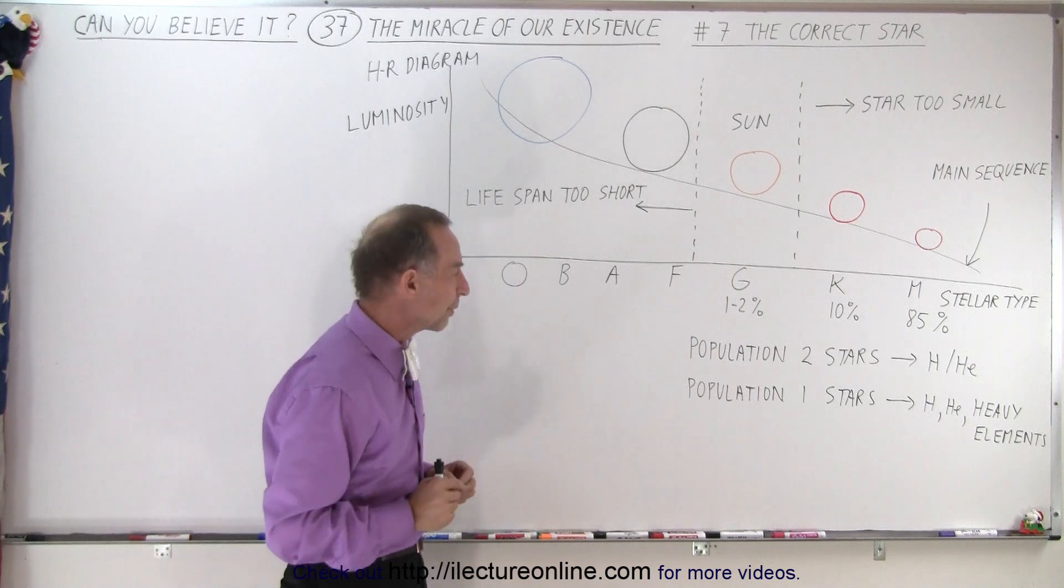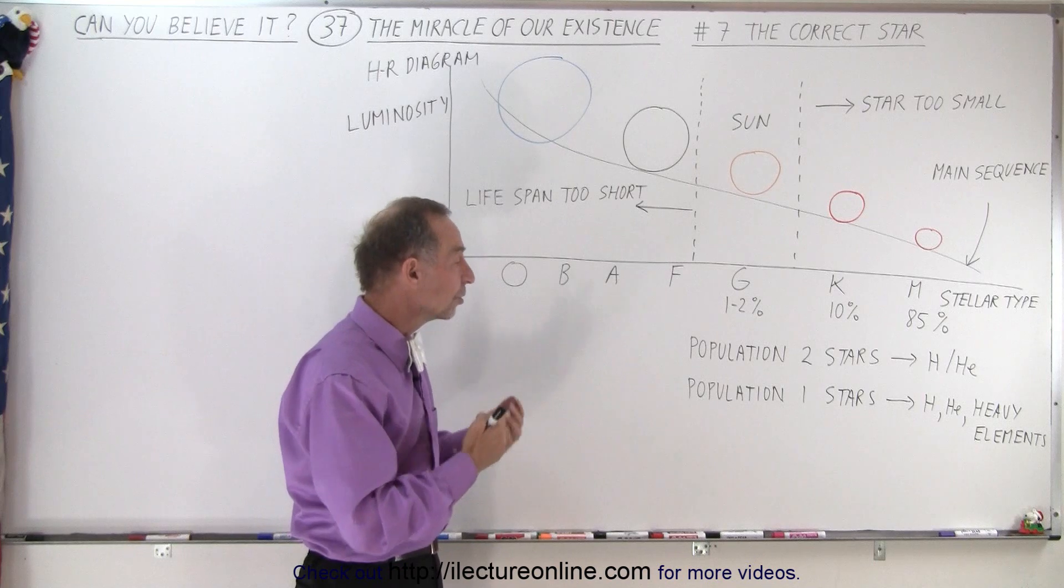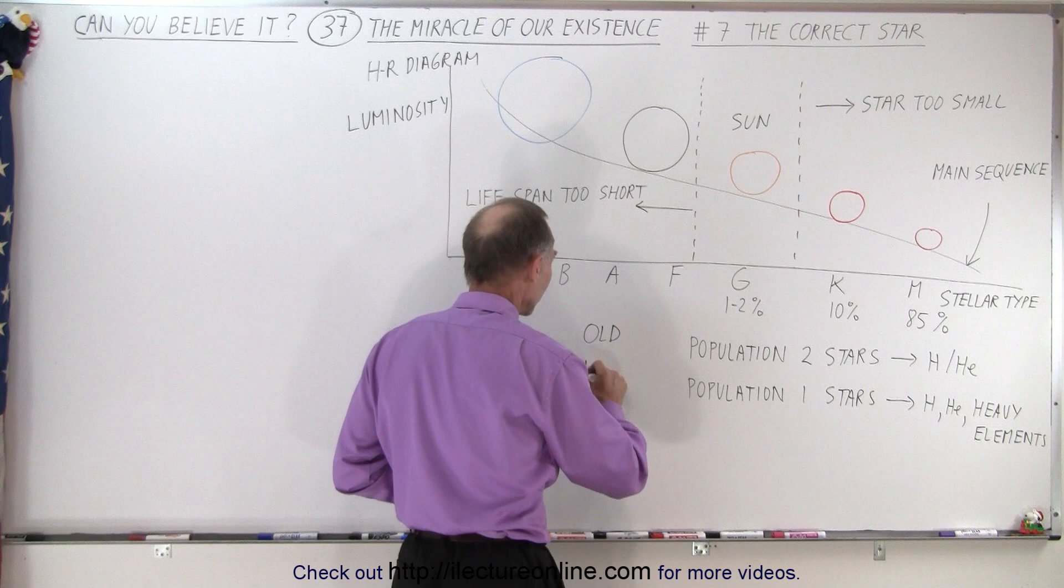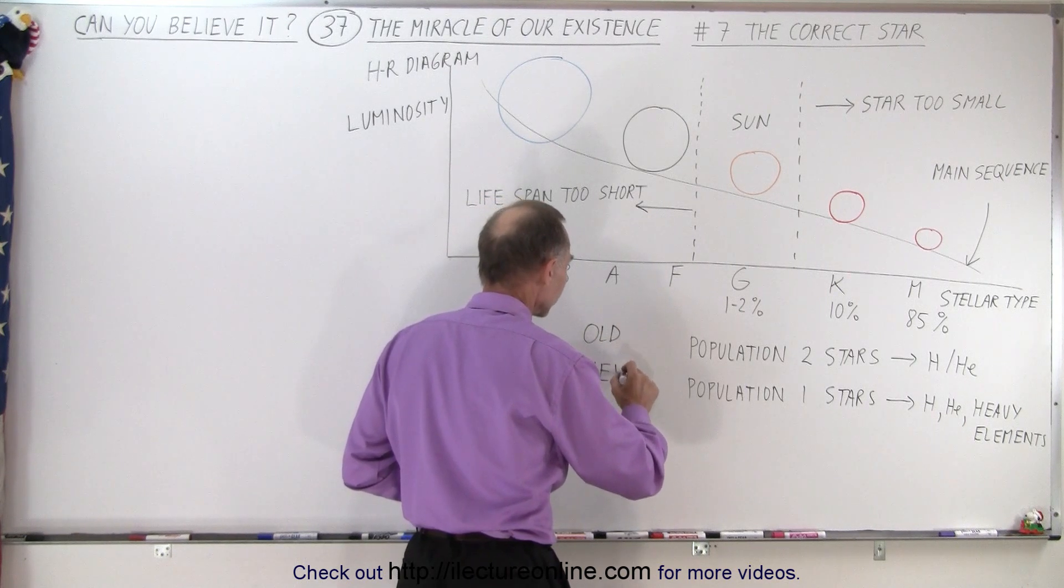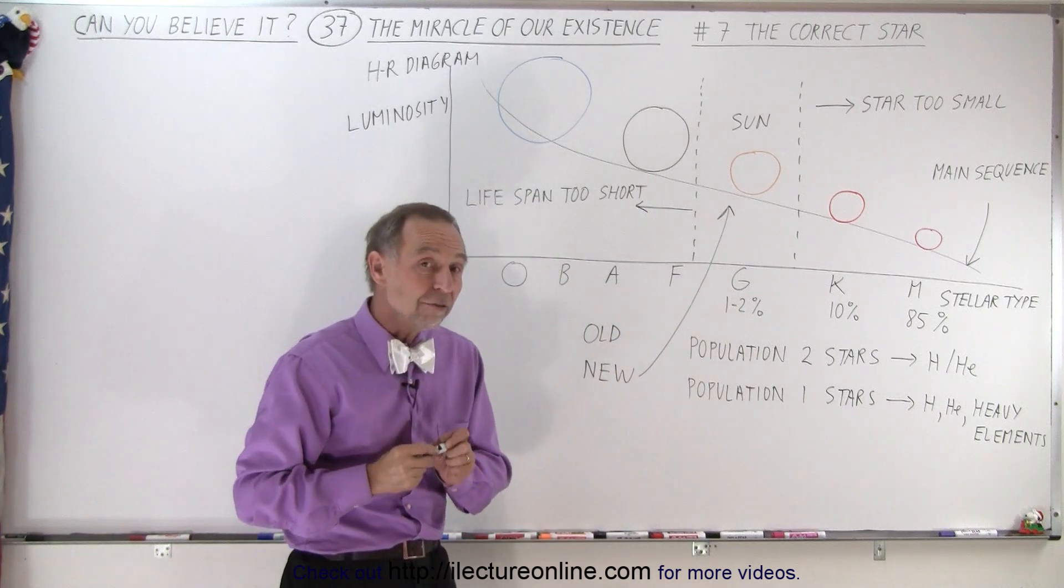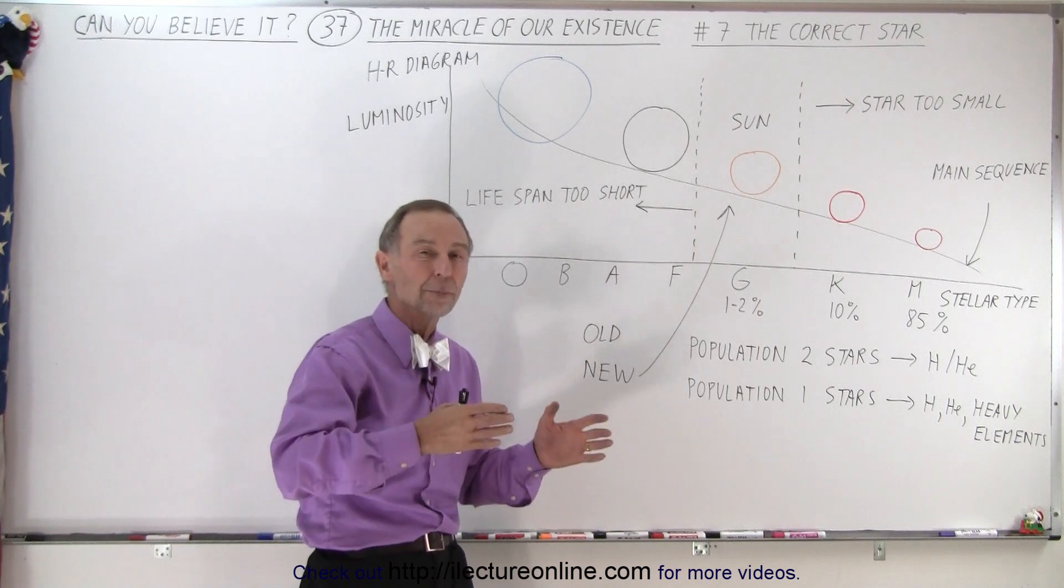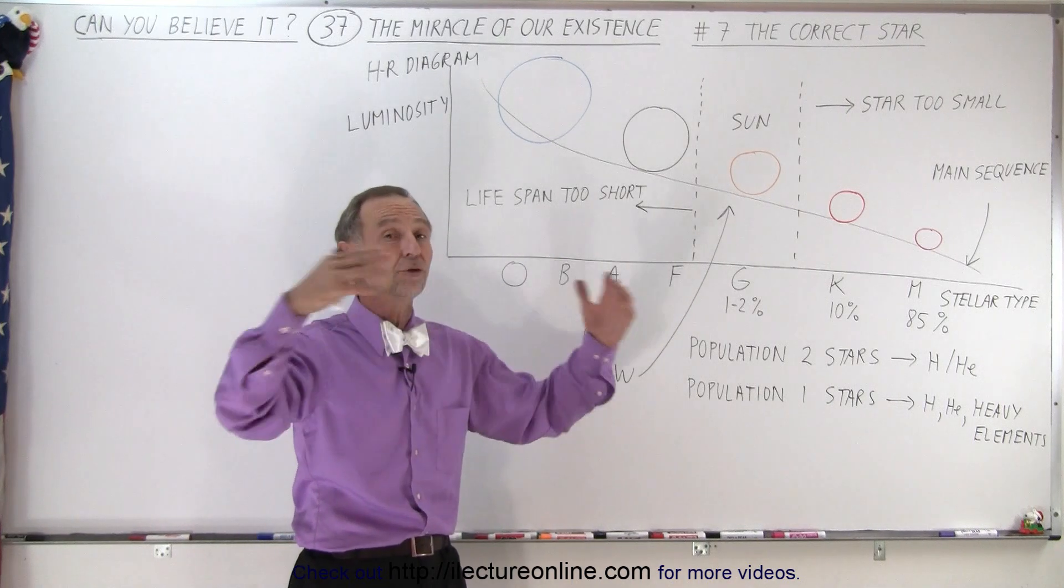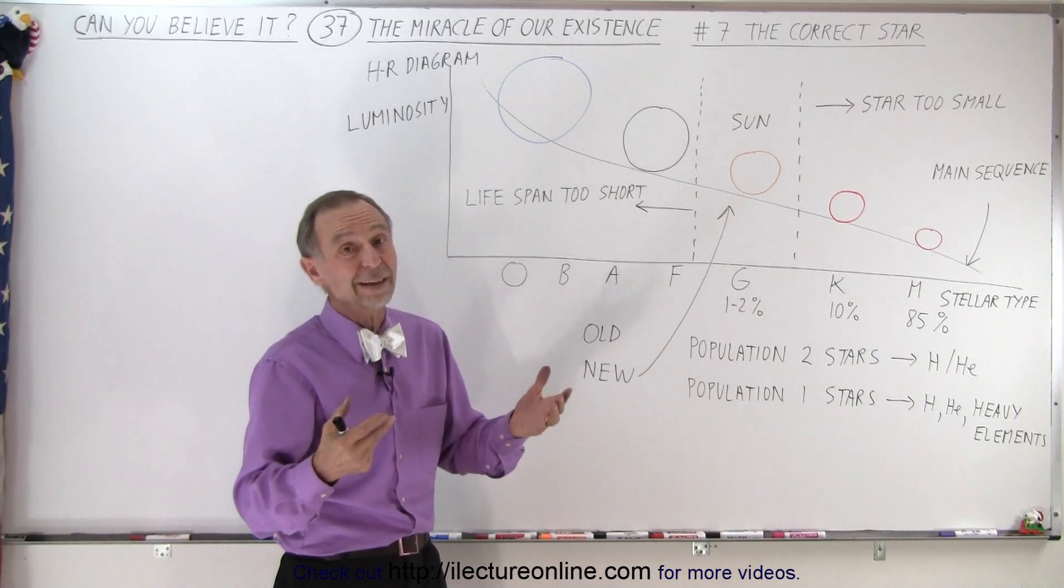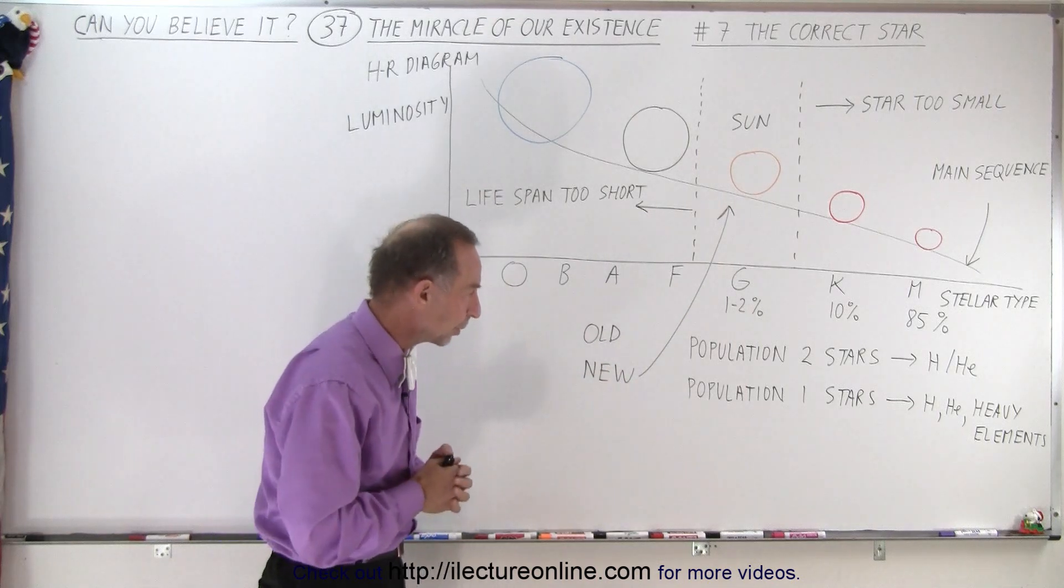Then there's a second point we have to make. There's two types of stars called Population 2 and Population 1 stars. The Population 2 stars are the very old stars, and the Population 1 stars are the newer stars. Our Sun is one of those newer stars. The difference is that old stars, Population 2 stars, existed a long time ago prior to any of those Type 2 supernovas, and they consist primarily of hydrogen and helium, which means that the planets around those stars are certainly going to be gas planets and not hospitable to life.